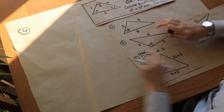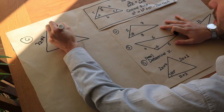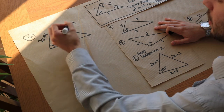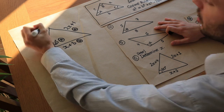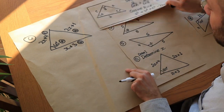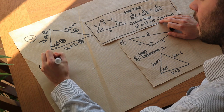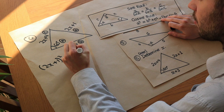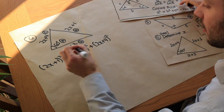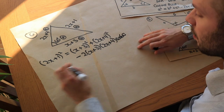In question 6, we want to find x in a triangle with algebraic side lengths: 2x + 4, 2x + 1, x + 3, and an angle of 60°. We label the 60° angle as capital A, making the opposite side (2x + 1) little a, and the other two sides b = x + 3 and c = 2x + 4. We use the cosine rule since we know all three sides and this angle.